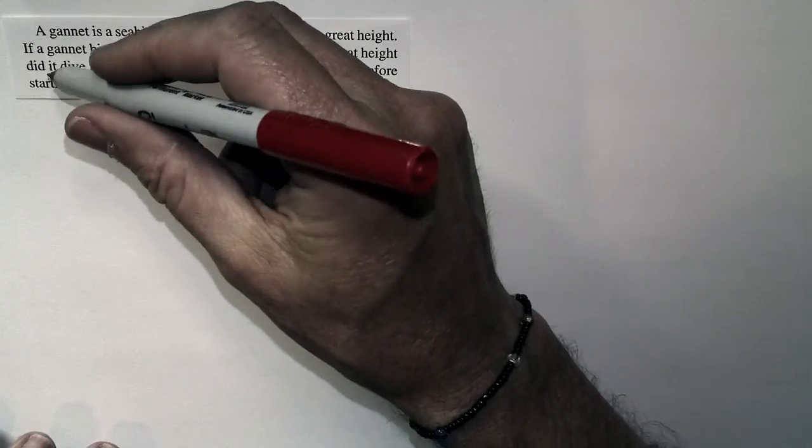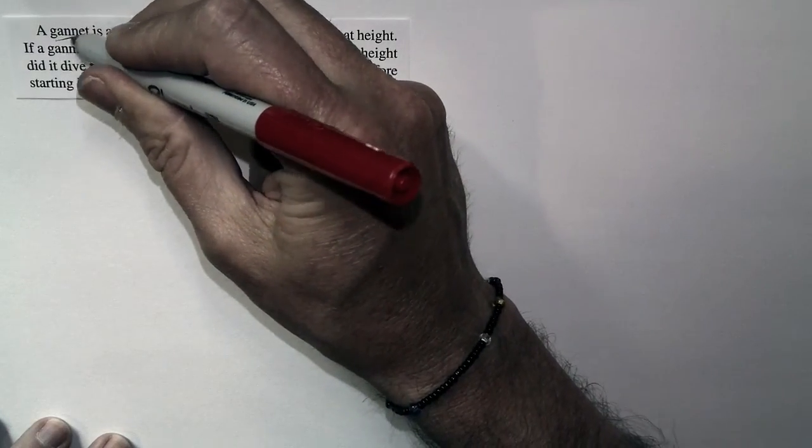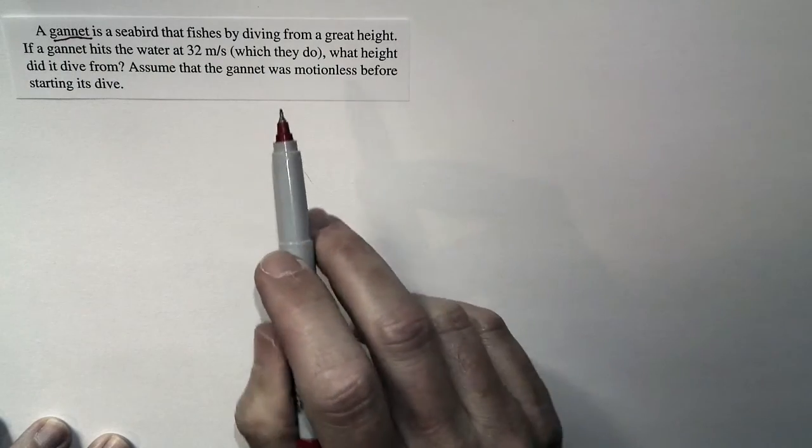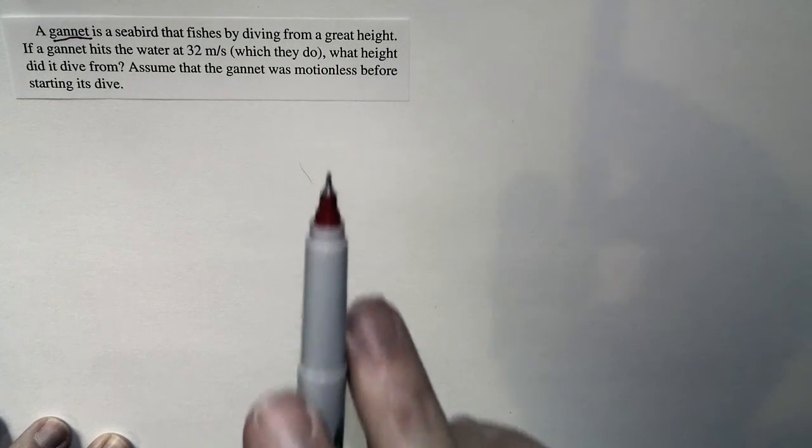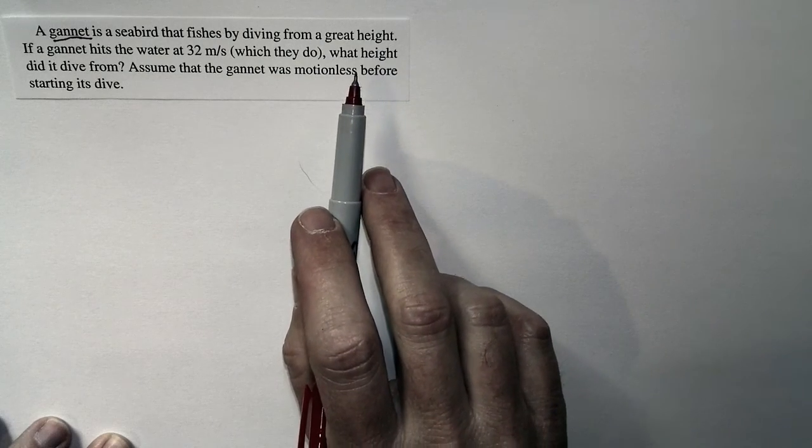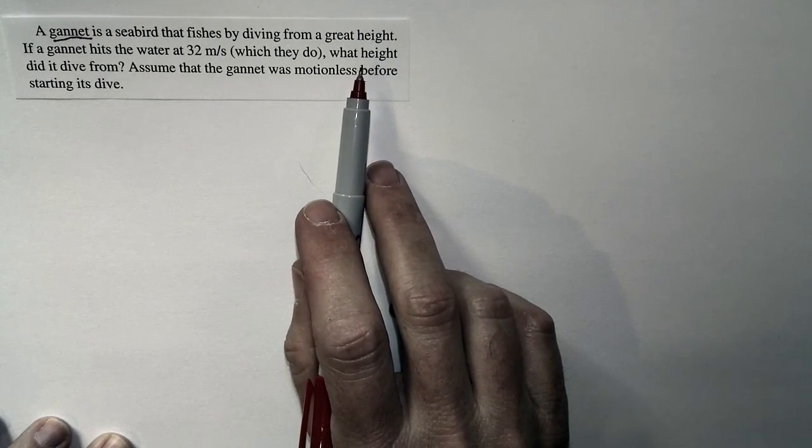Let's take a look at what this problem is asking. This is a question about a gannet, a seabird that fishes by diving from a great height. When they dive, they're just falling, and as it falls, it speeds up because it's in free fall.